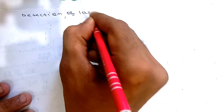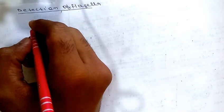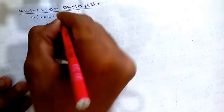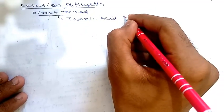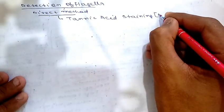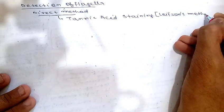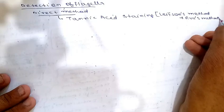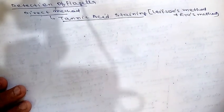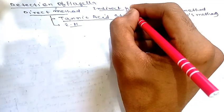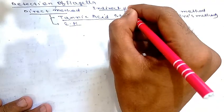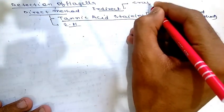For detection of flagella, there are direct and indirect methods. Direct demonstration uses tannic acid staining, also known as Leifson's method or Ryu's method, and simple electron microscopy. Indirect methods demonstrate motility to infer the presence of flagella.